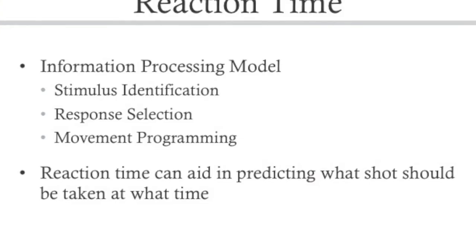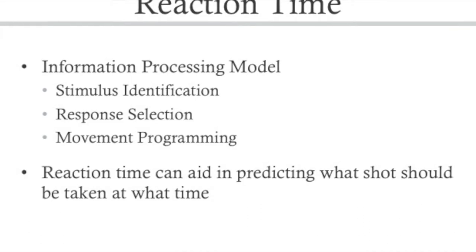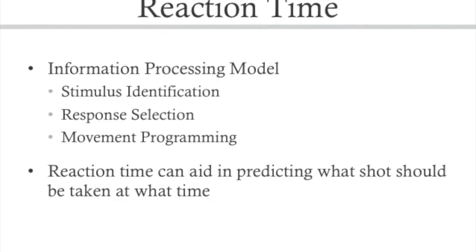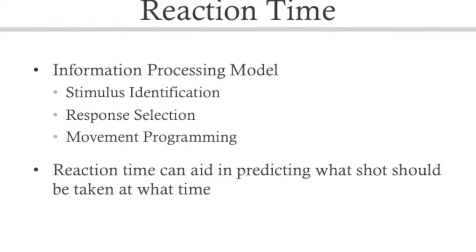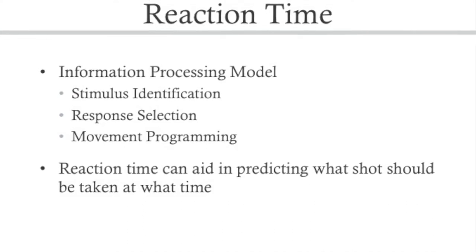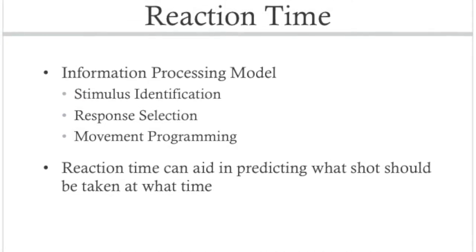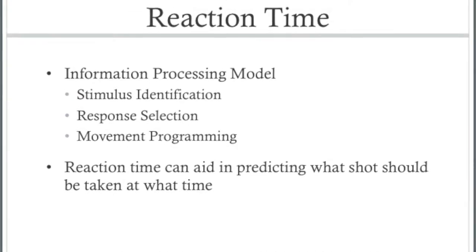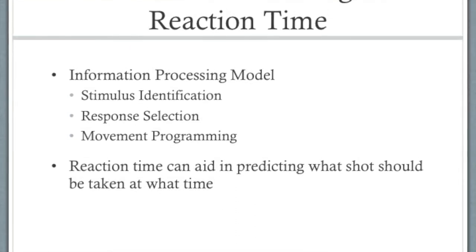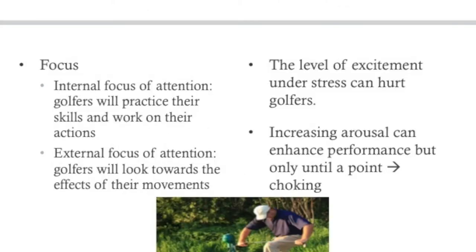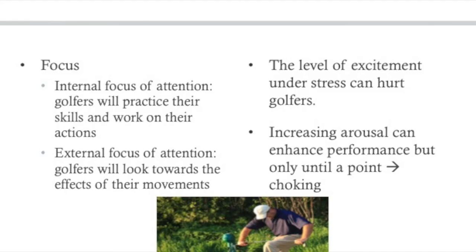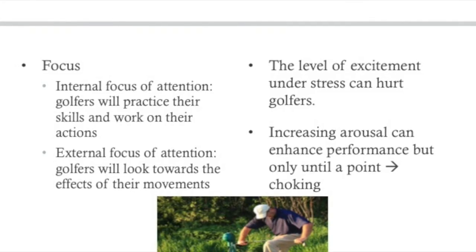Although not as intense in external stimuli as other sports like football or baseball, golfers still need to follow the processing model in order to analyze their environment for obstacles, decide how hard or what angle the shot must be taken, and create a strategy on how to get the least amount of strokes on a hole. This in turn allows their reaction time to aid the prediction process of what shot should be done at what time.